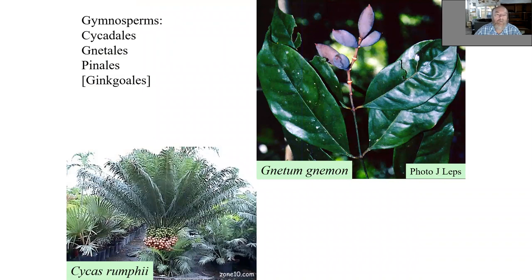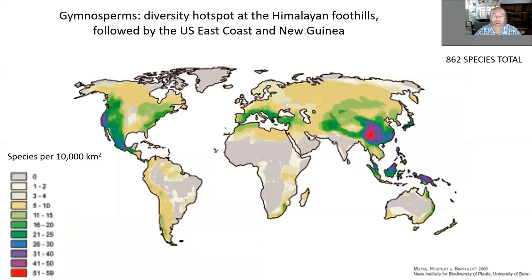Now we can go one lineage after another with some pictures and occasional comments. We will start with gymnosperms. There are Cycadales, Gnetales, Pinales, and Ginkgoales. We have the first three of them in tropical forests. We have Gnetum gnemon — a gymnosperm that would fool most botany students into thinking it's an angiosperm broadleaf tree. When we look at the species diversity hotspots of gymnosperms, it's definitely the Himalayas, but after that, in addition to the western coast of North America, it's New Guinea and Borneo in the tropics.